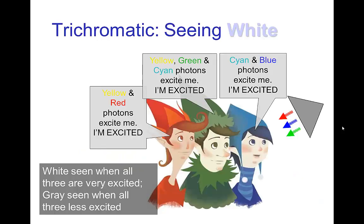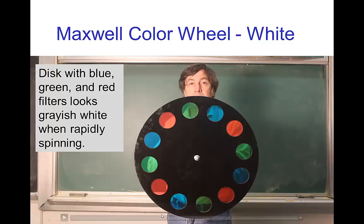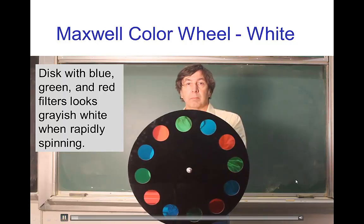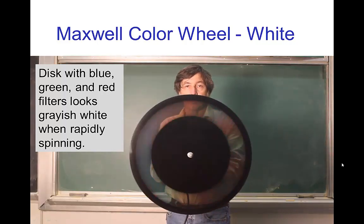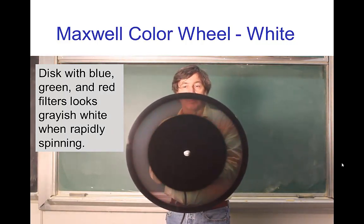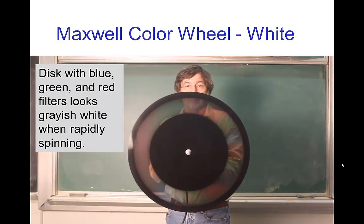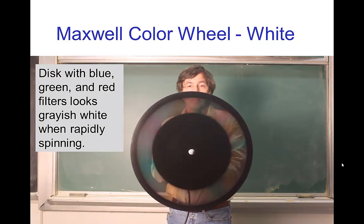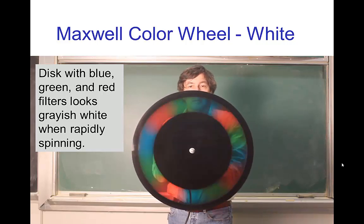The last of the non-spectral colors we'll look at is white. When all three receptors — Ron, Greg, and Biff — are excited, that is when we perceive the color white. Here's another spinning disc example: this one has three colors — red, green, and blue. And when it's spinning, when we see the three simultaneously, that is perceived as white.